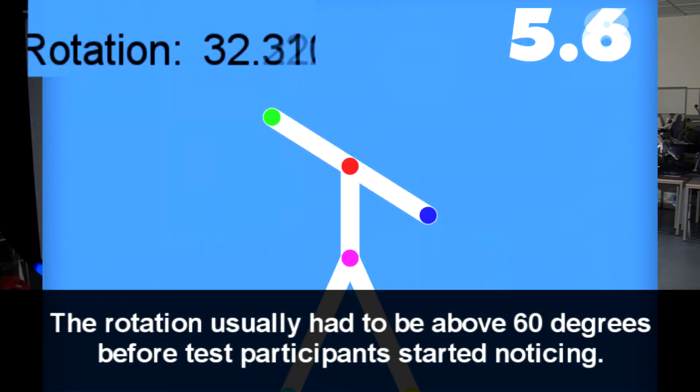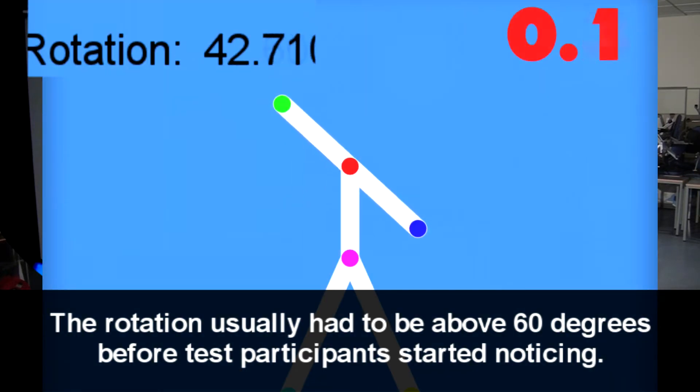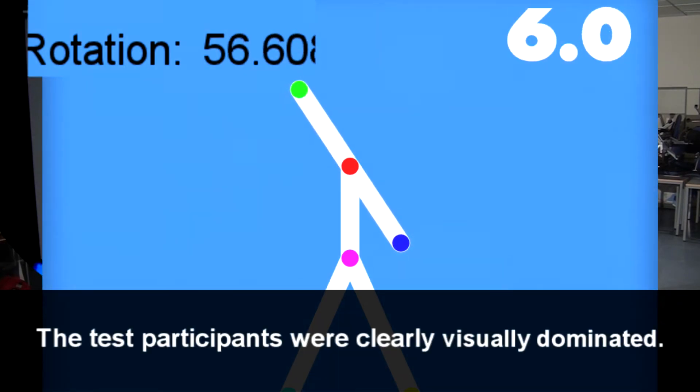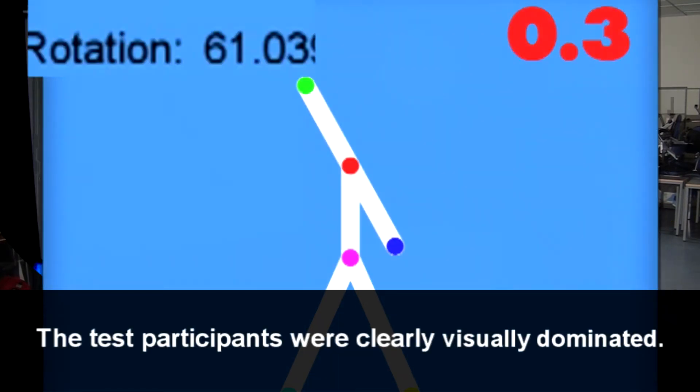The rotation usually had to be above 60 degrees before test participants started noticing. This indicates that the test participants trusted their eyes much more than their kinesthesis. The test participants were clearly visually dominated.